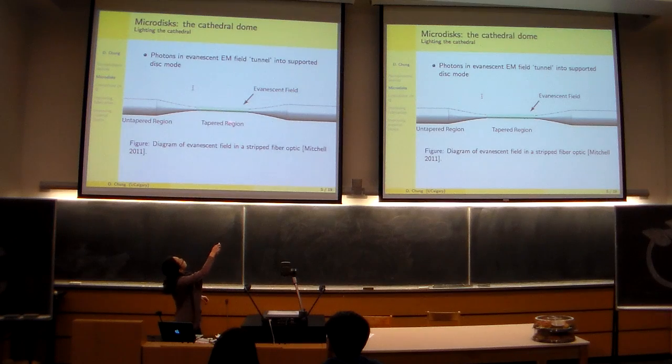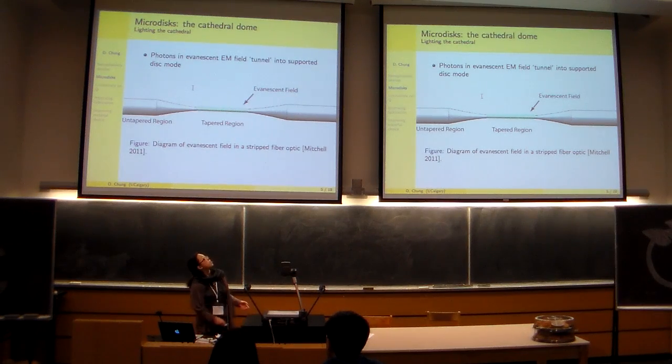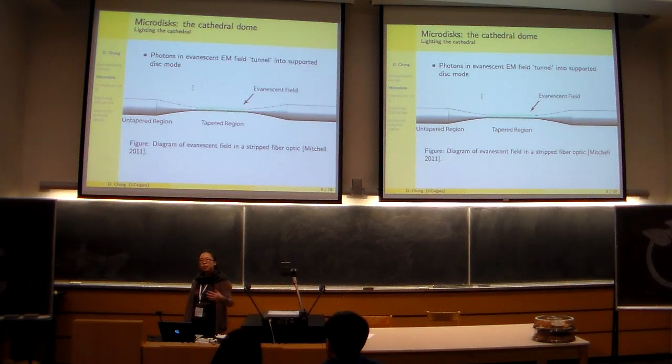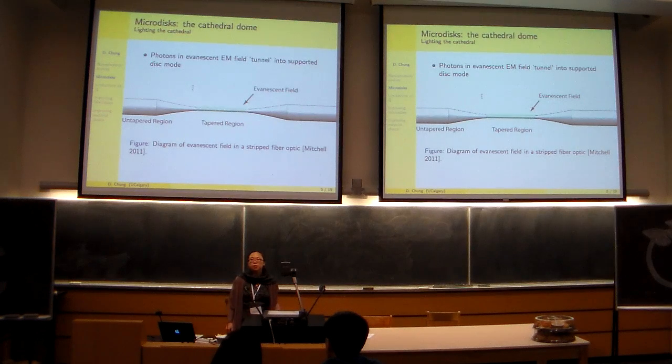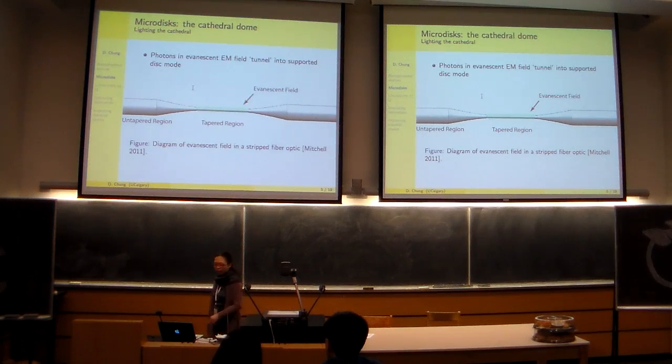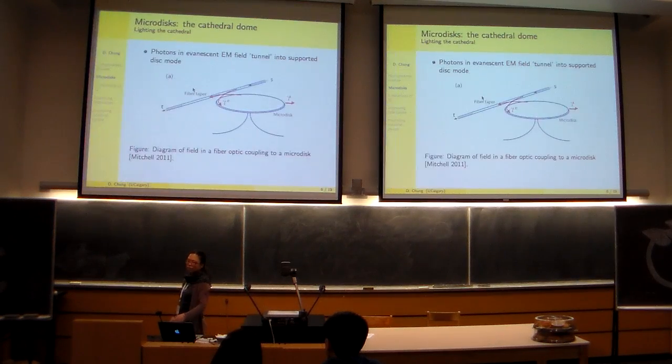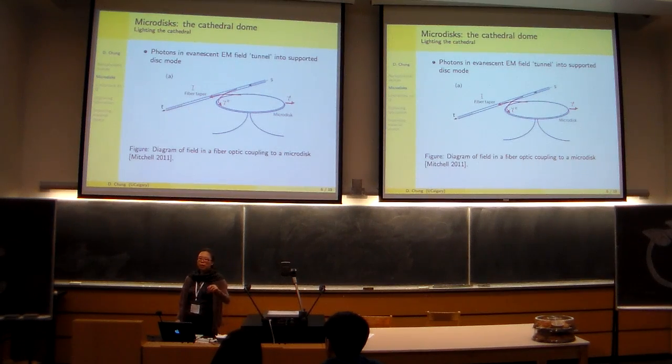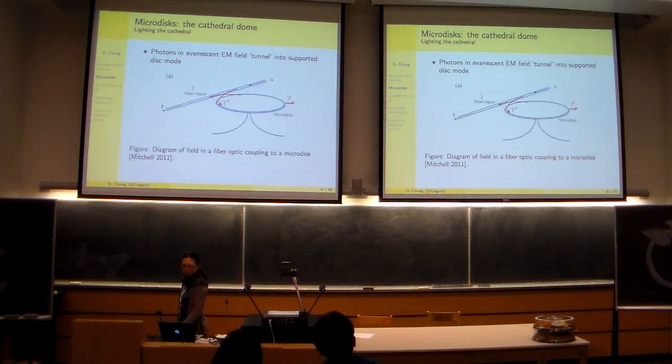And this fiber optic has been worked and tapered. And the diameter of this tapered region is 100 times less than the diameter of the surrounding fiber. So the tapered region has a diameter of around one or two microns. This means that the light that's traveling inside the fiber, its evanescent field extends quite far into the air. And if I bring this evanescent field close to one of my microdiscs, photons from the fiber actually couple into a supported mode in my microdisc.